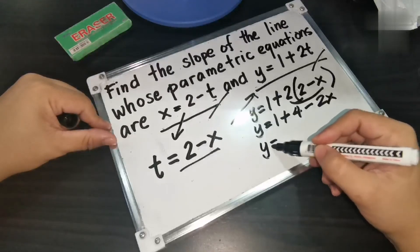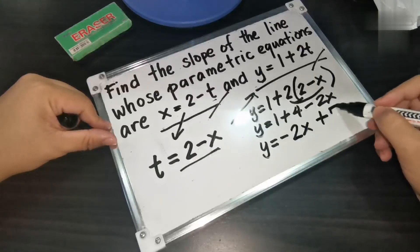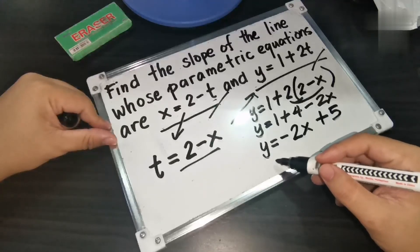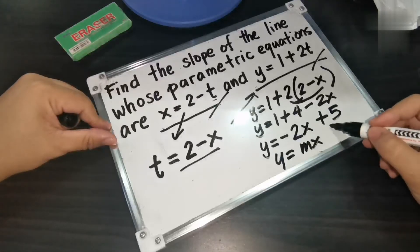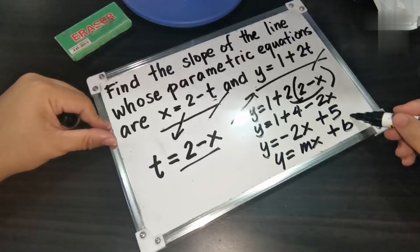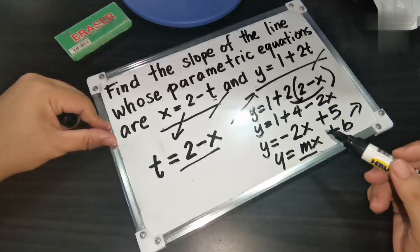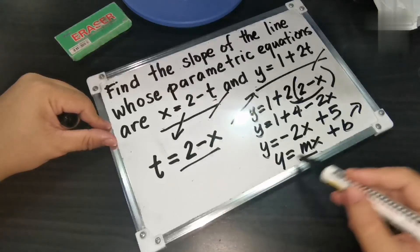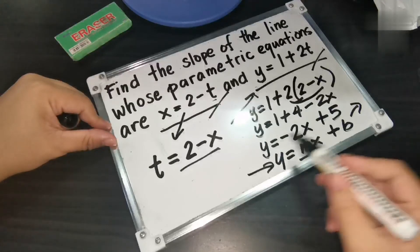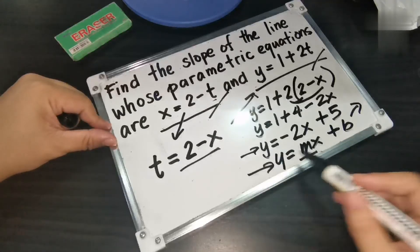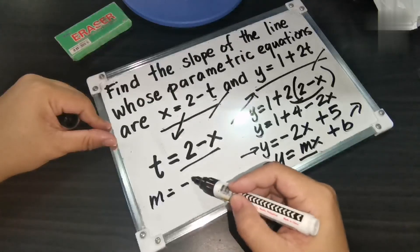So y is equal to negative 2x plus 5. If we follow the slope-intercept form, which is y is equal to mx plus b, then b is your y-intercept and m is your slope. From our resulting equation y is equal to negative 2x plus 5, our slope m is equal to negative 2.